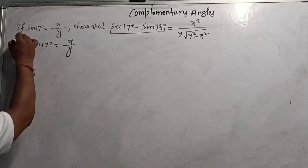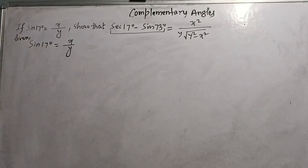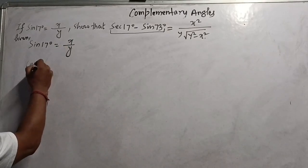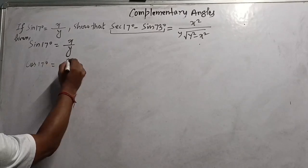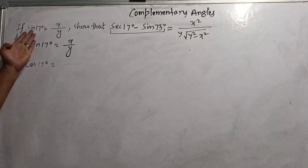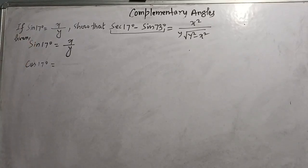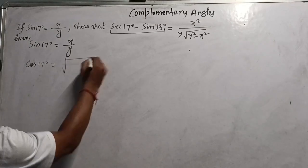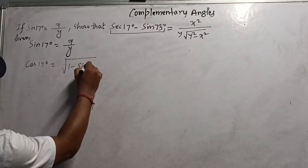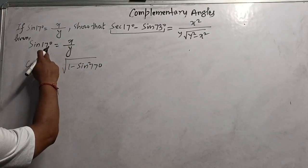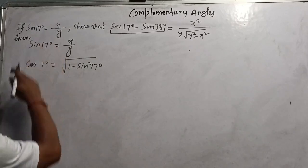Since sin17° = x/y is given, the first step is to find the value of cos17°. We know the formula cos θ = √(1 - sin²θ). Substituting sin17° = x/y, we get cos17° = √(1 - x²/y²).